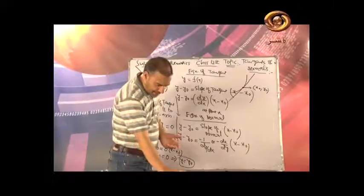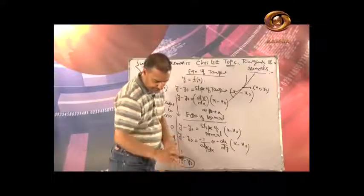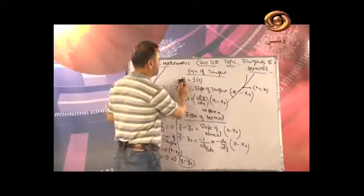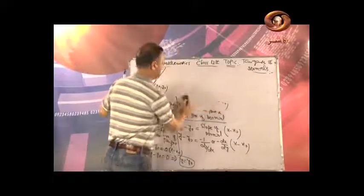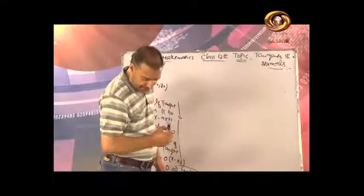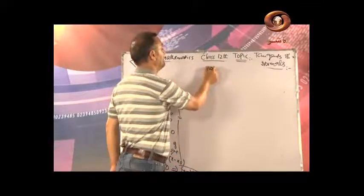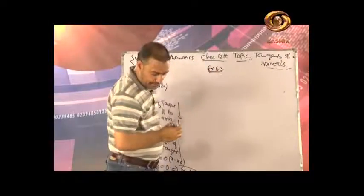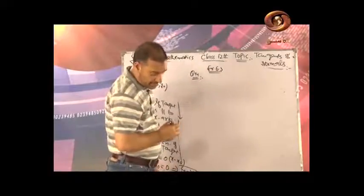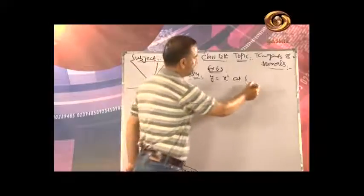Now let's do some questions. From Exercise 6.3 of Class 12, Question 14: Find the equation of tangent and normal at the indicated point. The curve is y = x², and the point is (0, 0). So x₀ = 0 and y₀ = 0.